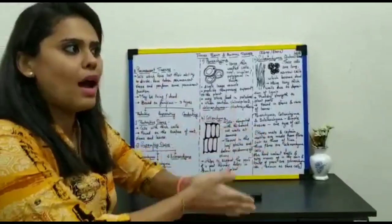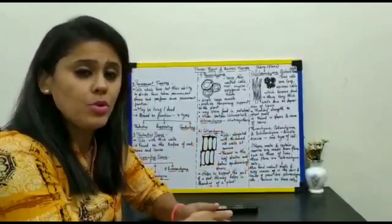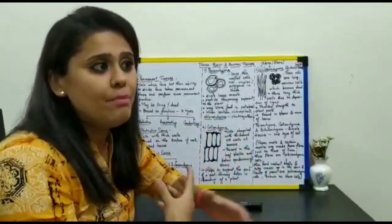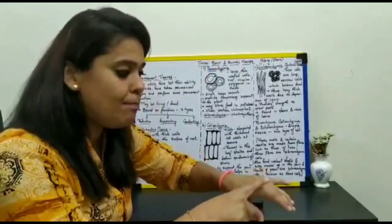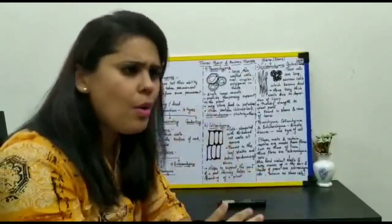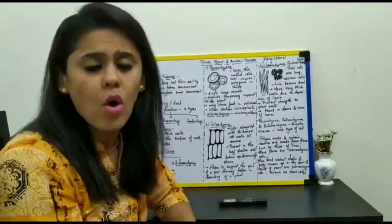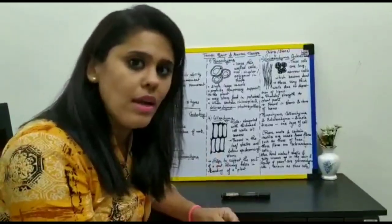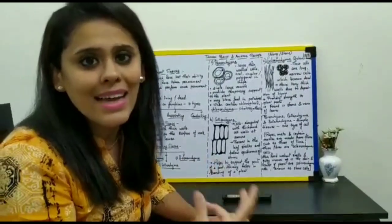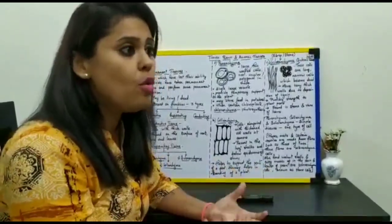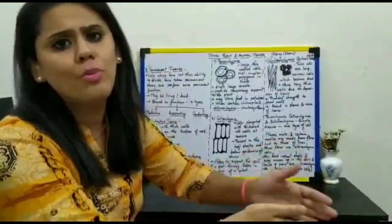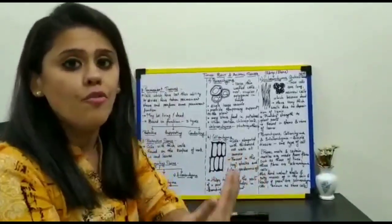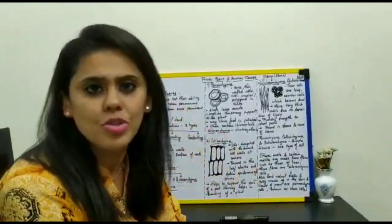When we say protective in function, think of how a plant can be protective. If you compare a plant body with an animal or human body — in the human body, the skin is the protective layer. In the same pattern, the plant has an epidermal layer of cells throughout its body — on the surface of the leaves, stem, and roots. This epidermal layer acts as the protective tissue of the plant.